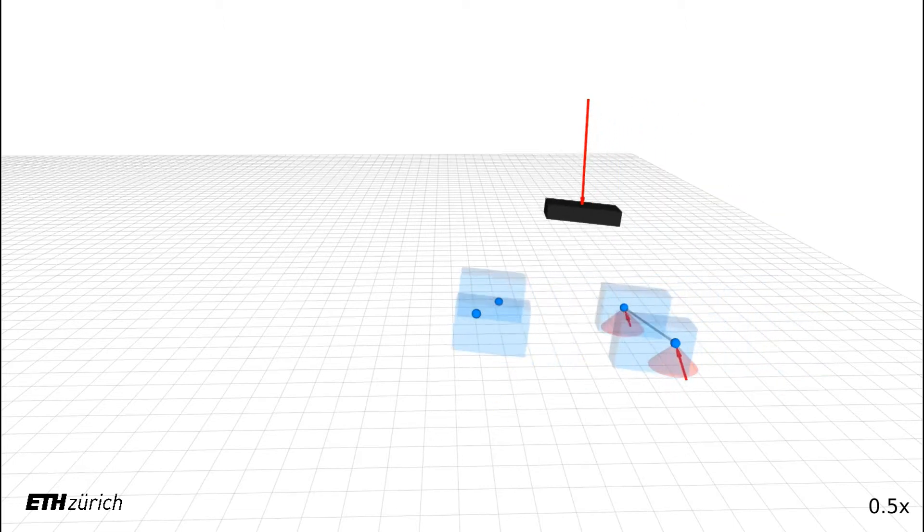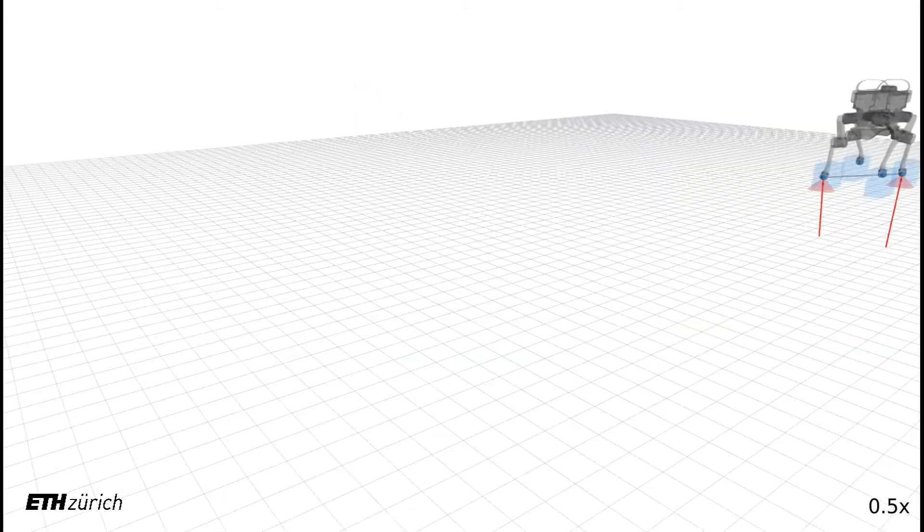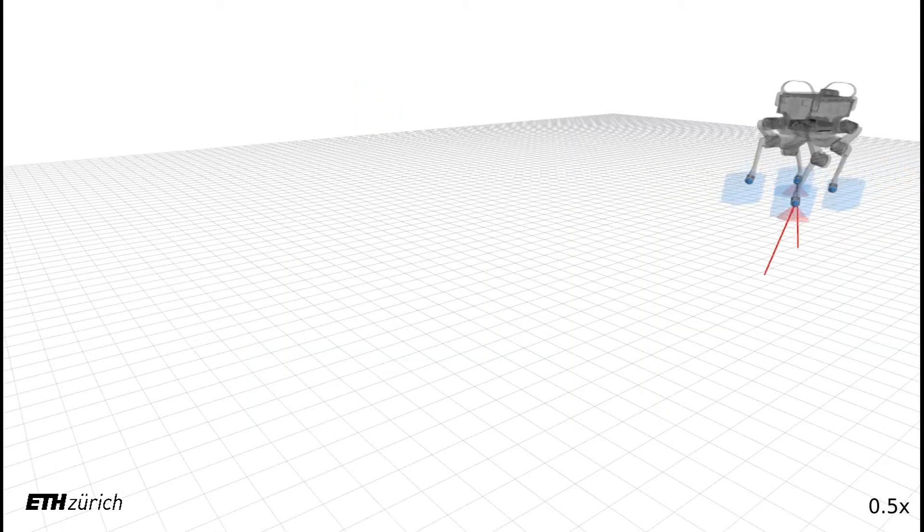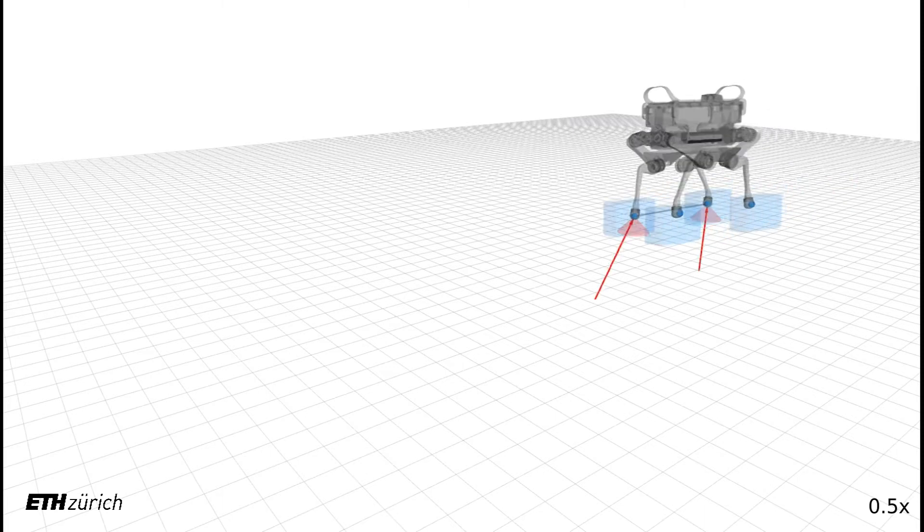Although these robots look very different, they can all be modeled by the motion of their feet and the base. Each foot must remain inside its reachable area relative to the base, shown by the blue cubes.